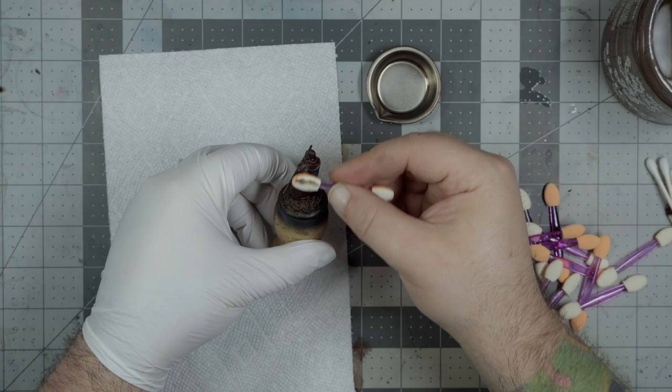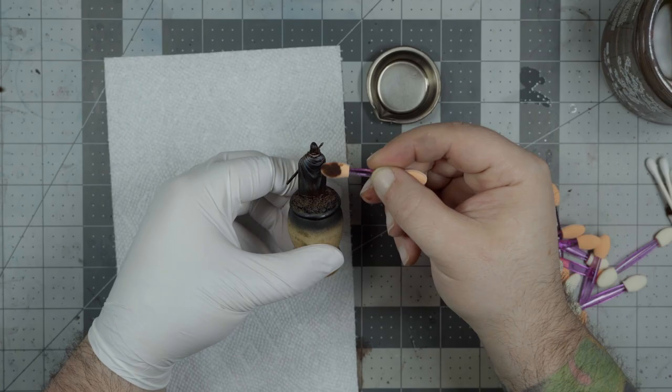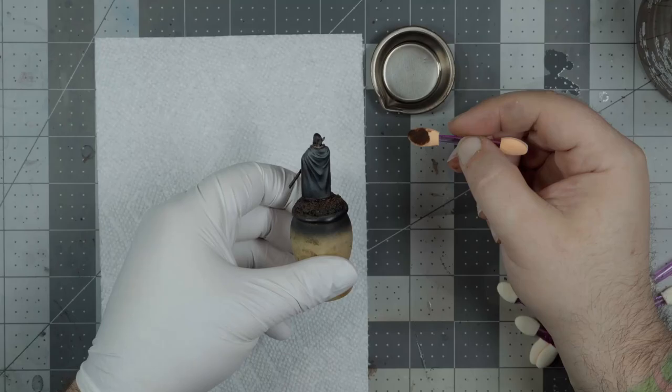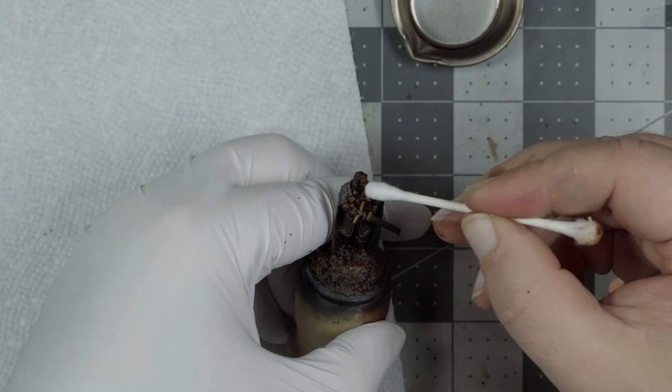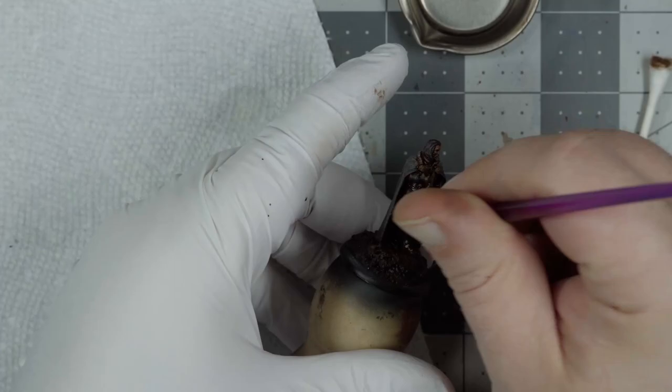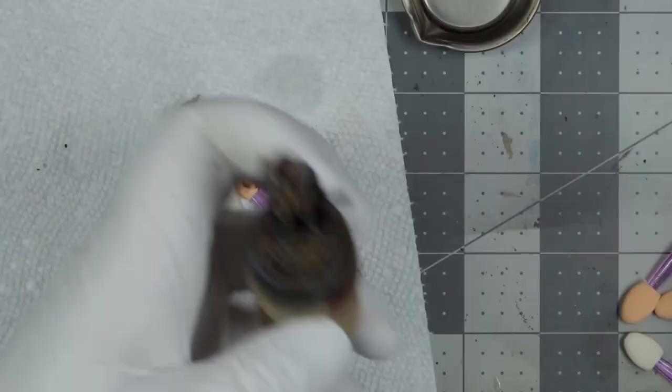Makeup sponges, white spirit, and a downward motion so that you're leaving shadows in areas that would actually be shadowed as you clean off the model. And you just proceed like this until it looks right. I grab a paintbrush here to loosen up some of the pigment that is deposited where I can't reach with the sponge just so that I'm able to get it out of there.